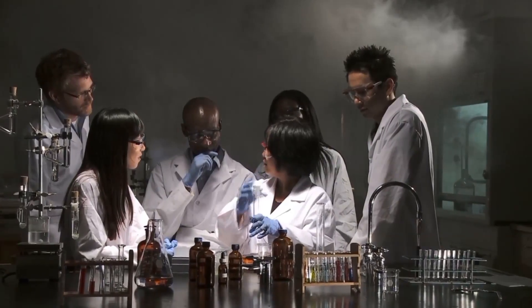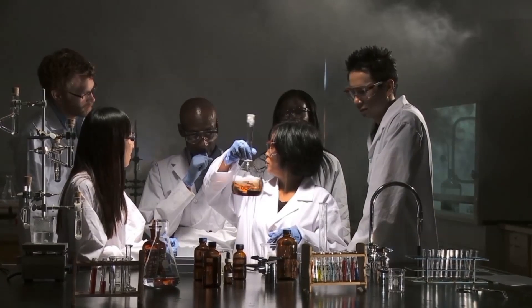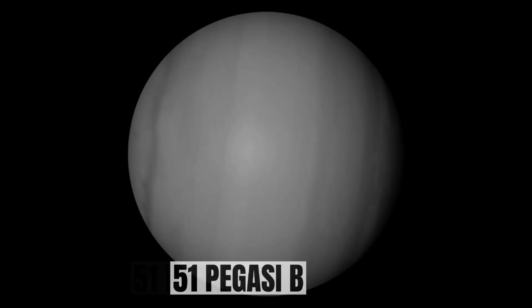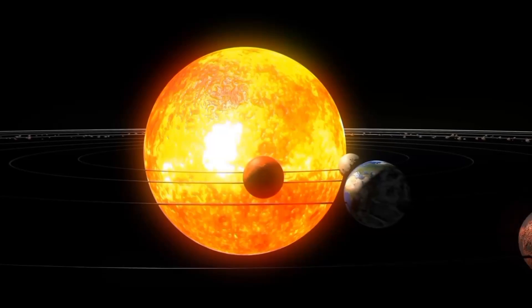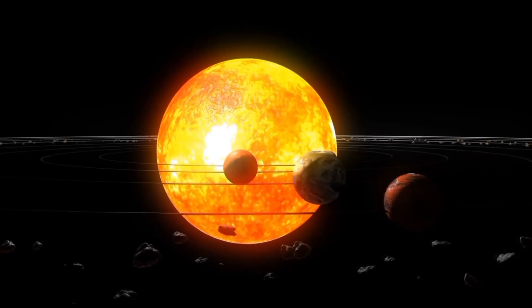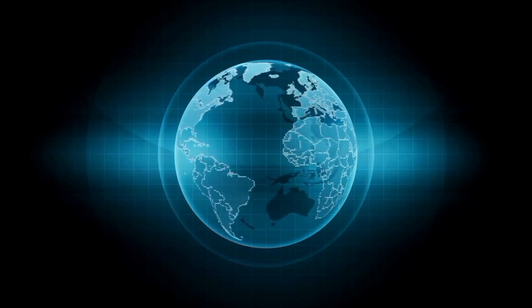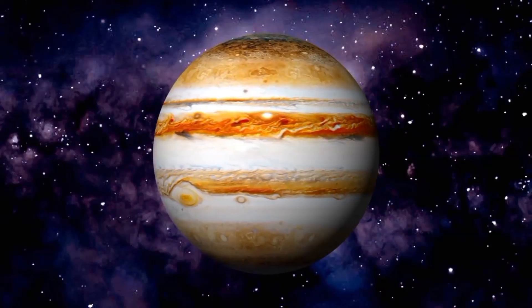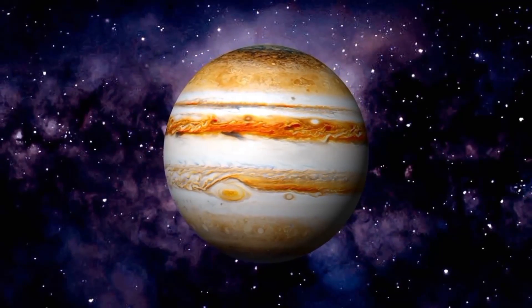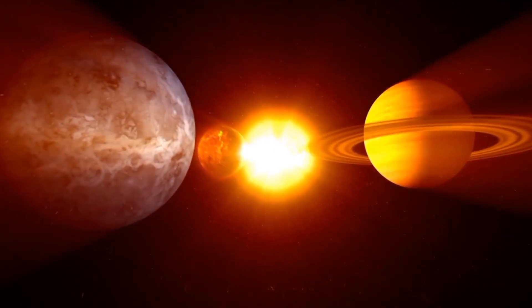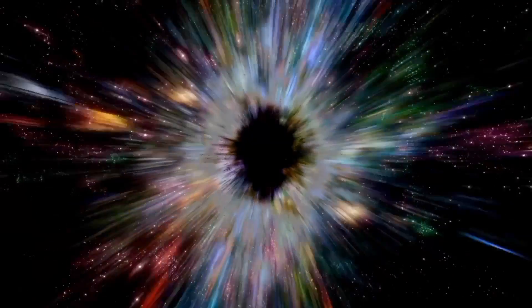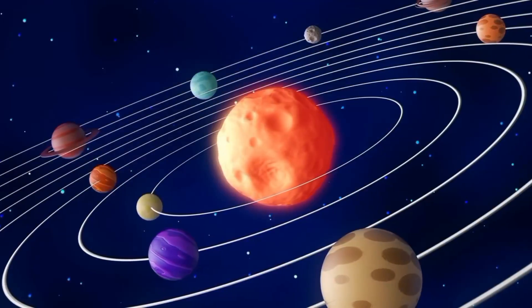However, an estimate of probability is the best we can hope for. 51 Pegasi b is the first exoplanet discovered that orbited around a regular star like our Sun and made a splash on the global stage for the first time. It is a hot Jupiter located 50 light-years away and stuck in orbit around its star that lasts for four days.